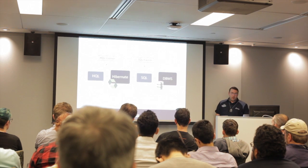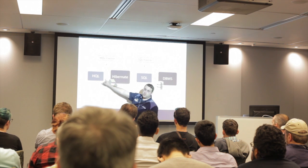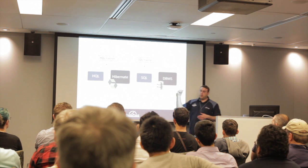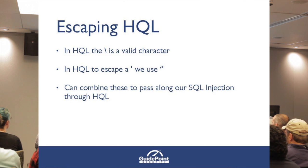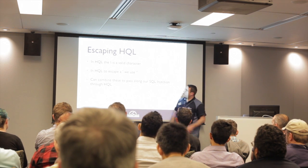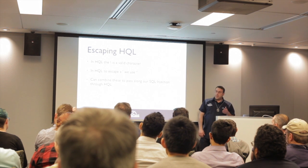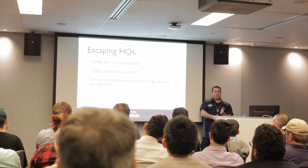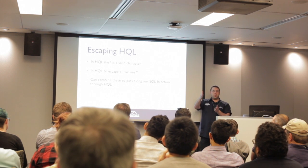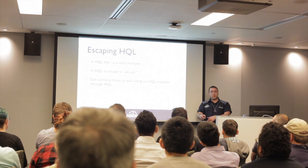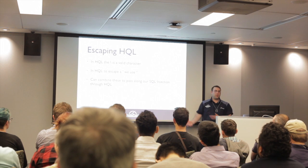We essentially have two layers of injection: the HQL injection, and then inside that, a SQL injection that gets passed on and executed by the database. To make this work, there are two different escape patterns. In HQL, a backslash is a valid character, and HQL uses two single quotes to represent one single quote. We can combine these to break out of the HQL parser — we're escaping the single quote at the HQL level. Then the backslash, which HQL treats as harmless, actually escapes the single tick at the SQL level, making it a valid SQL injection.